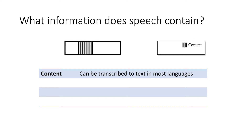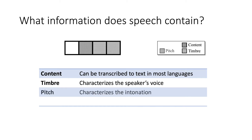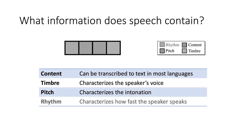The first block is, of course, the content block. The second block is timbre, which characterizes how the speaker's voice sounds like. The third block is pitch, which is an important component of a speaker's intonation. Finally, the fourth block is rhythm, which characterizes how fast the speaker speaks.